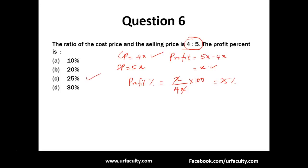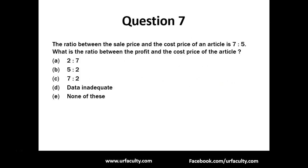Question 7: The ratio between the sale price and cost price of an article is 7:5. What is the ratio between the profit and cost price of the article? Here again, what are they given? Selling price - this is a keyword. They have exchanged, so don't get confused. Selling price equals 7x, cost price equals 5x.